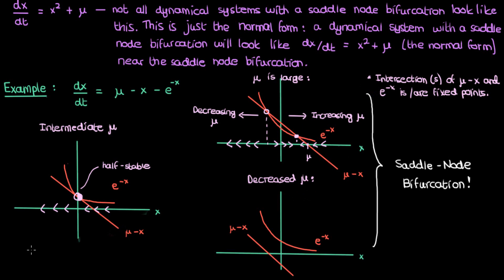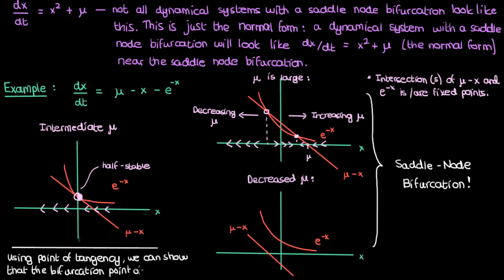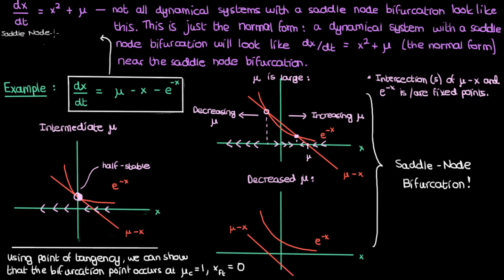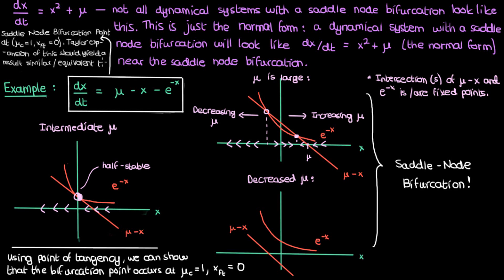The bifurcation point is found from the middle configuration where there is a transition through a half-stable fixed point. Using the fact that the line is tangent to the exponential — they intersect at one point and have the same slope there — you can show that the bifurcation point occurs at a critical parameter value of μ_c = 1 and x_ft = 0. This leads naturally to the idea of normal forms.